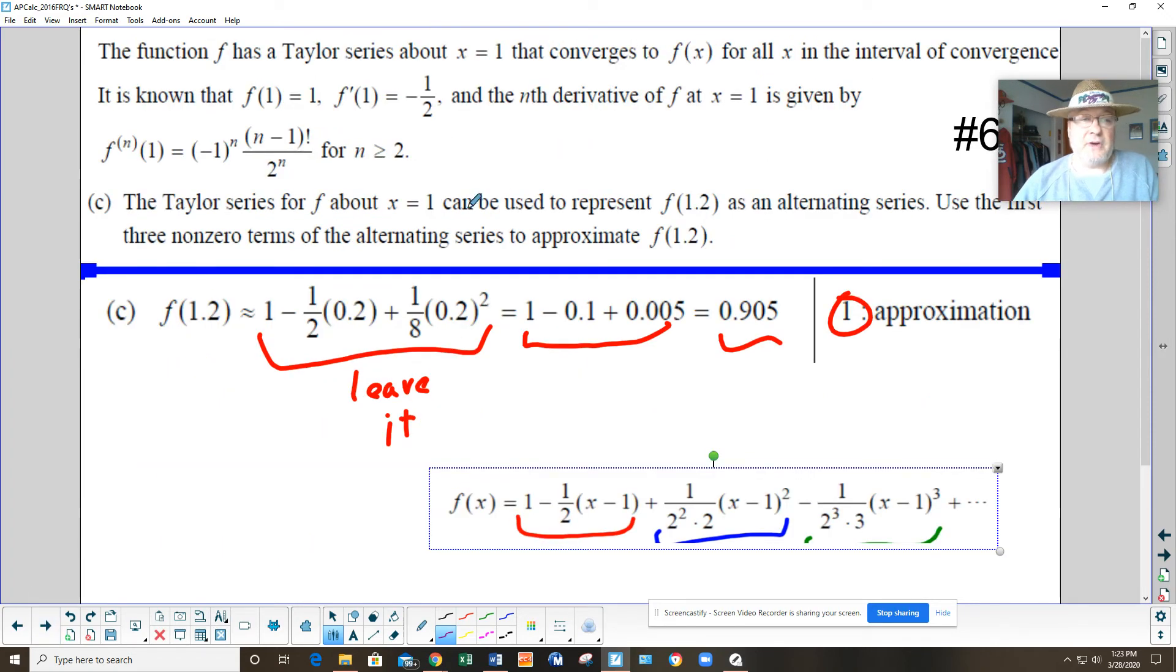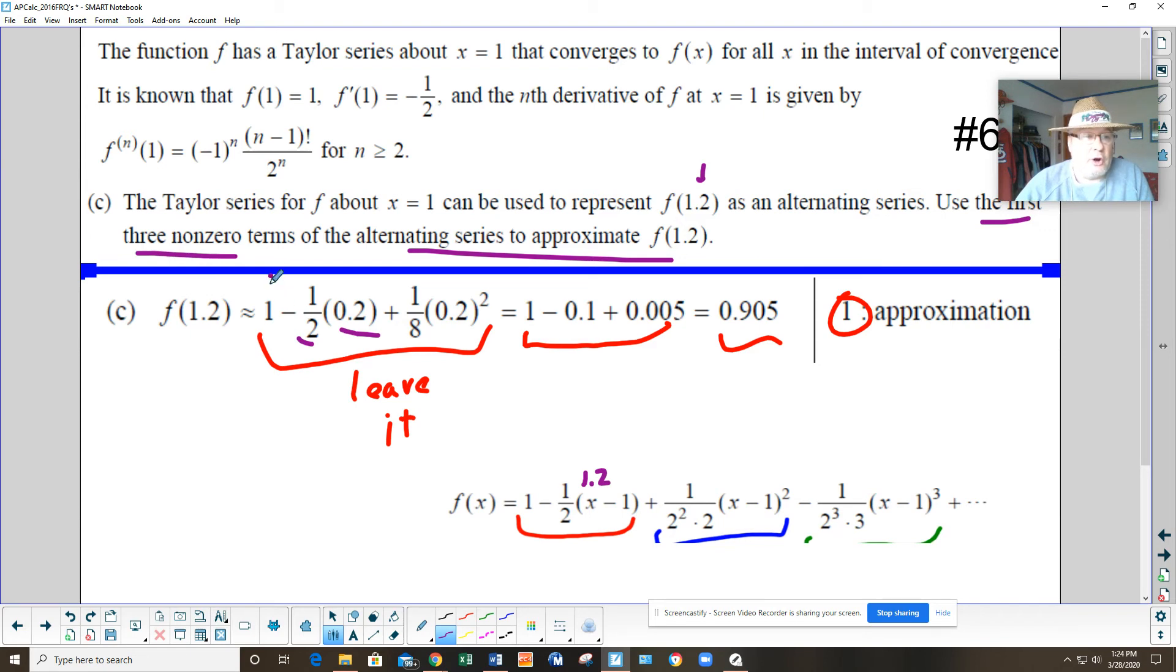Harmonic series, alternating harmonic series, P series, all of those items are tested in 2020. So there's part B. There comes part C. The Taylor series for f about x equals 1 can be used to represent f of 1.2 as an alternating series. Use the first 3 nonzero terms of the alternating series to approximate this. Well, this is the work from number 1 again, or part A, you should say. So when you're evaluating 1.2, you just substitute in 1.2 in for all your x's. 1.2 minus 1 is 0.2. And then you have your negative half in front.